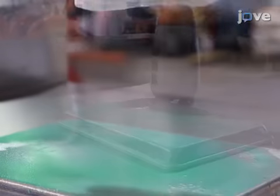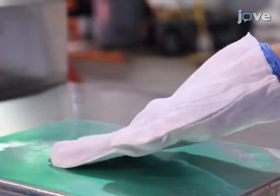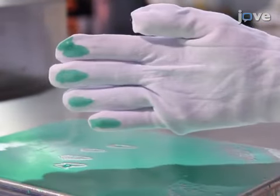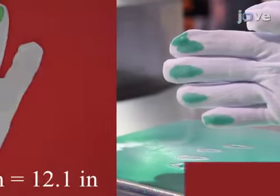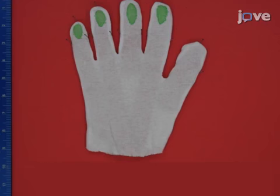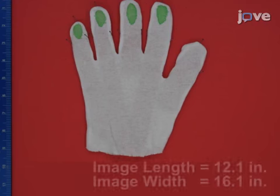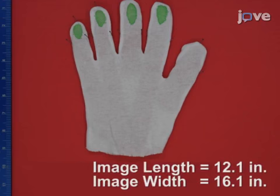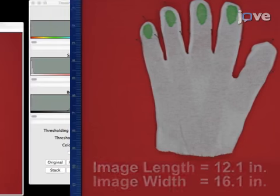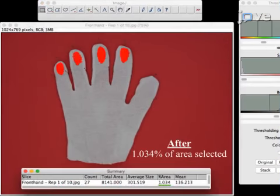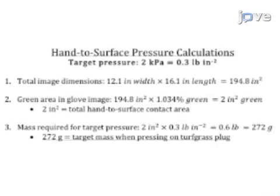With cotton gloves, press fingers on the non-porous surface. Then take a digital photograph and use an imaging program to calculate the area contacted based on the absence of green food coloring in that area. Based on the area of hand-to-surface contact, calculate the amount of pressure needed to wipe the same area using 2 kilopascals.